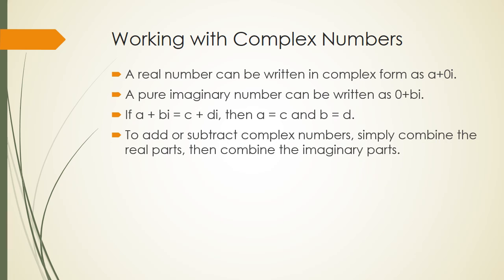To add or subtract complex numbers, we're simply going to combine the real parts and then combine the imaginary parts. So for example, a plus bi plus c plus di equals a plus c plus bi plus di. Subtraction works the same way. Just watch that negative. Make sure you distribute it.